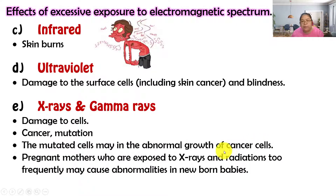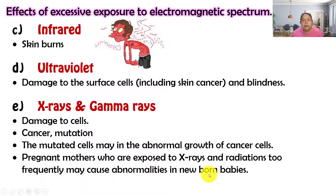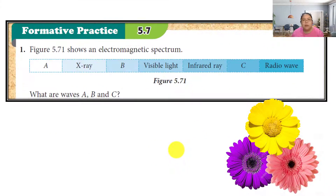Regarding cell mutation: normally one cell becomes two, two becomes four. With abnormal mutation, cells may grow uncontrollably. Pregnant women who are exposed to x-rays or radiation too frequently may cause abnormalities in newborn babies. That's why when you go for an x-ray, they will ask whether you are pregnant.